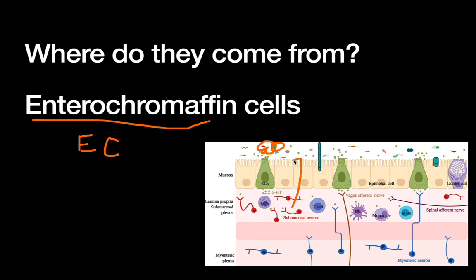Of course, no nerves pass through the mucosal barrier to sample the gut lumen itself. So we have to have cells that sample this lumen and then secrete hormones or neurotransmitters to communicate with the enteric nervous system. The cells that do that, as you can see here in the green, are those EC cells.